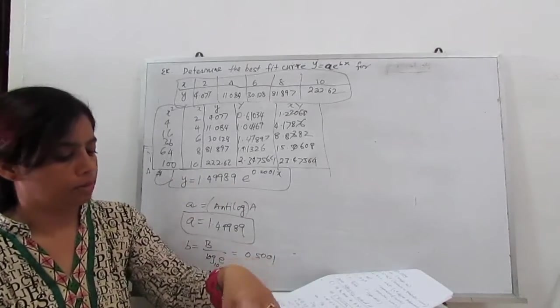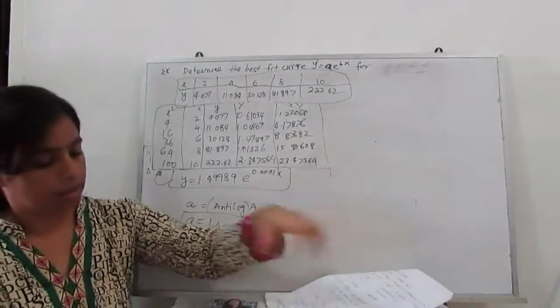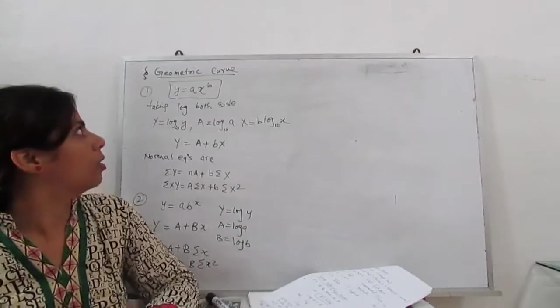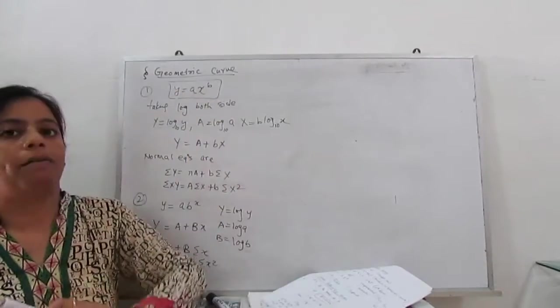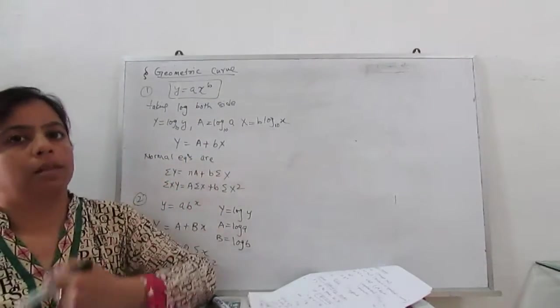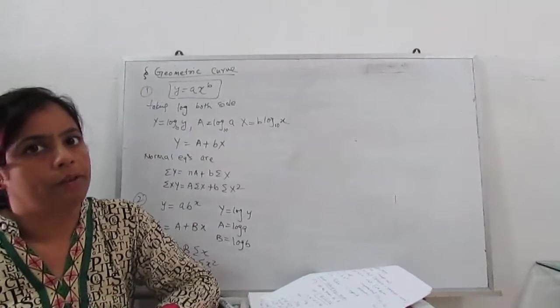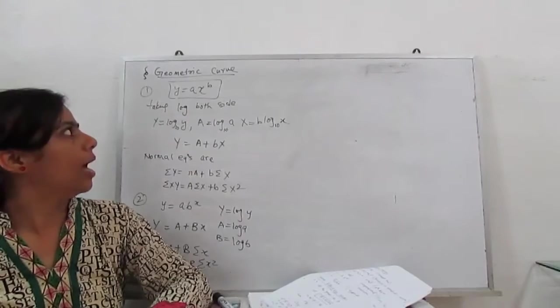Next, further we will move some another normal equation form for another curve. Next curve is geometric curve. What is geometric curve? Form is y equals a x to the power b. In exponential curve, we have e to the power some constant or some function of x. Here, on the x, we have some power.